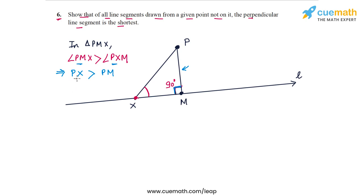In other words, no matter where you take x along the line, as long as Px is not perpendicular to the line L, Px will surely be greater than PM where PM is perpendicular to the line. So in other words, PM is the shortest possible line segment that you can draw from P to the line L, and that completes our proof.